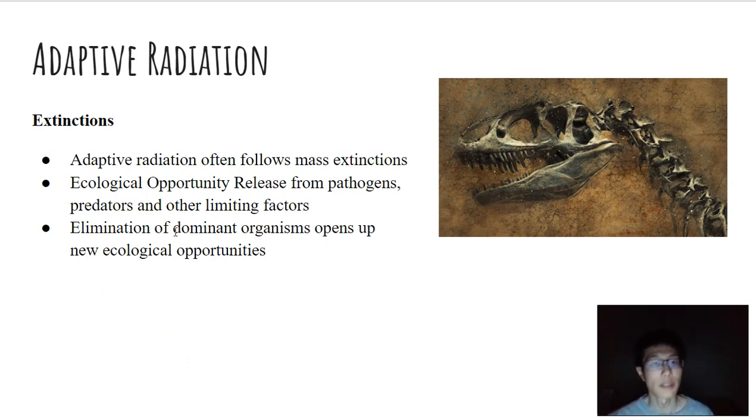So elimination of dominant organisms opens up new ecological opportunities, as well as ecological opportunity release from things such as pathogens and predators and other things that get knocked out as a result of the extinction. So that's the first thing that triggers adaptive radiation.